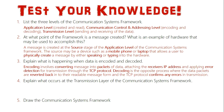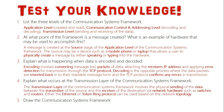Question four: explain what occurs at the transmission layer. This is where the communication systems framework physically sends the data between the transmitter and the receiver — essentially from the source to the destination — going through network hardware such as switches and routers, using either an Ethernet or token ring protocol based on the topology being used on that network.